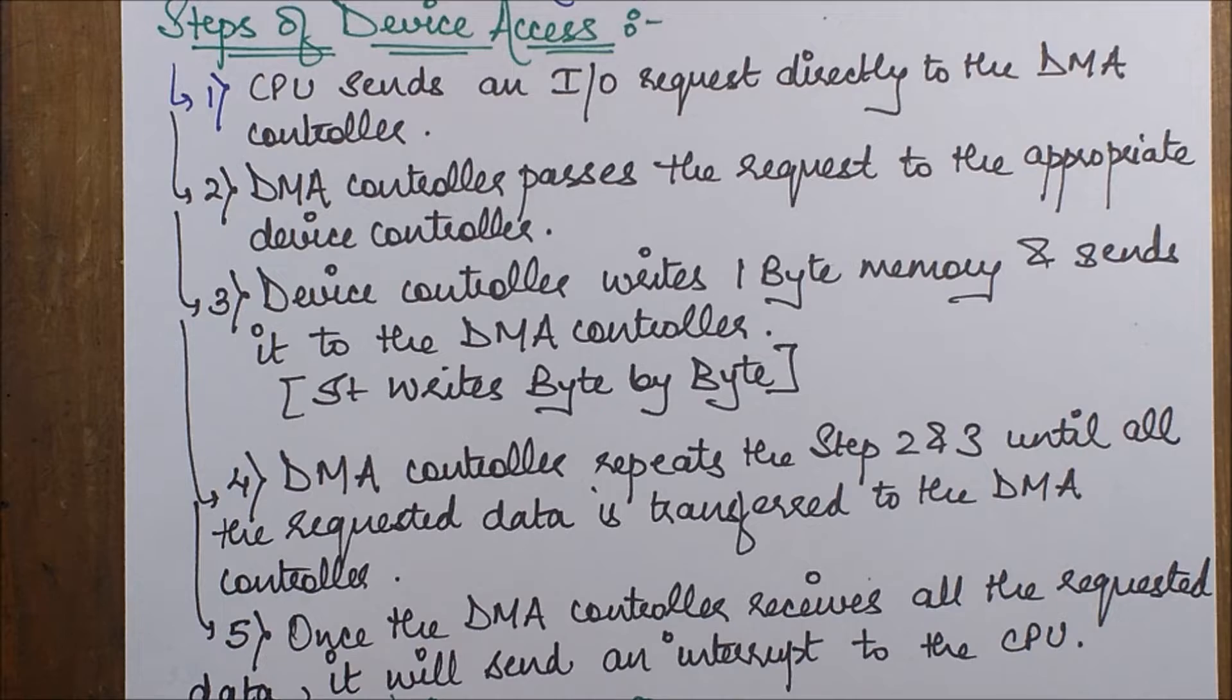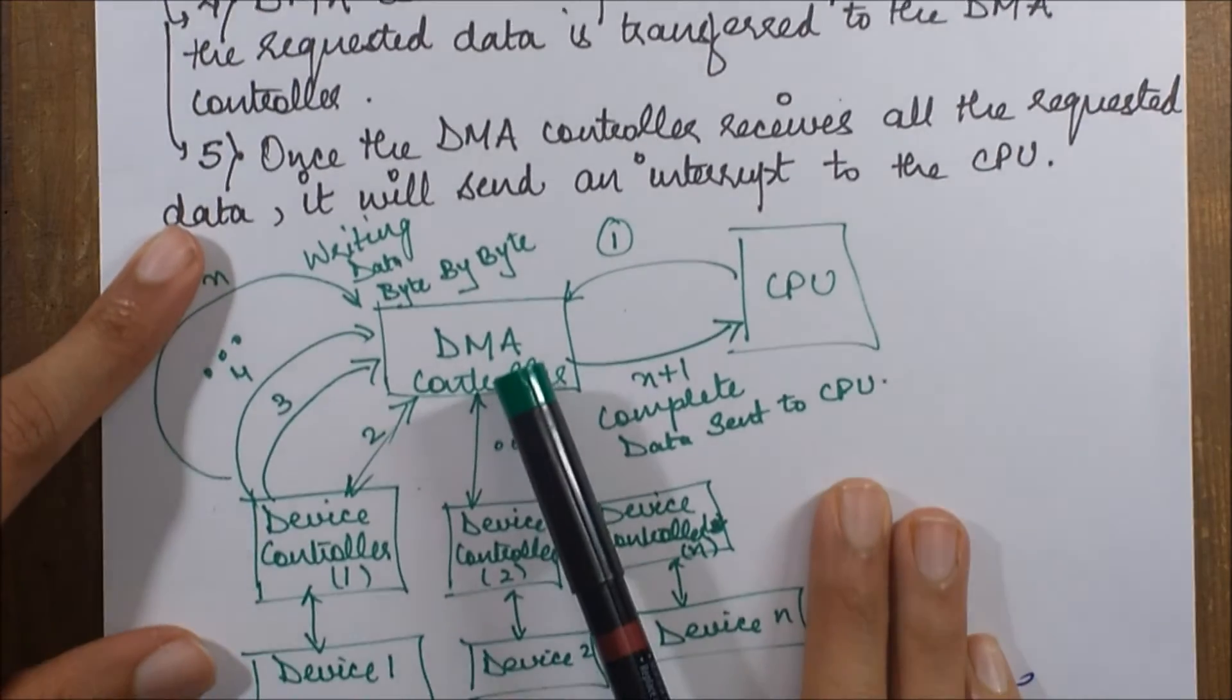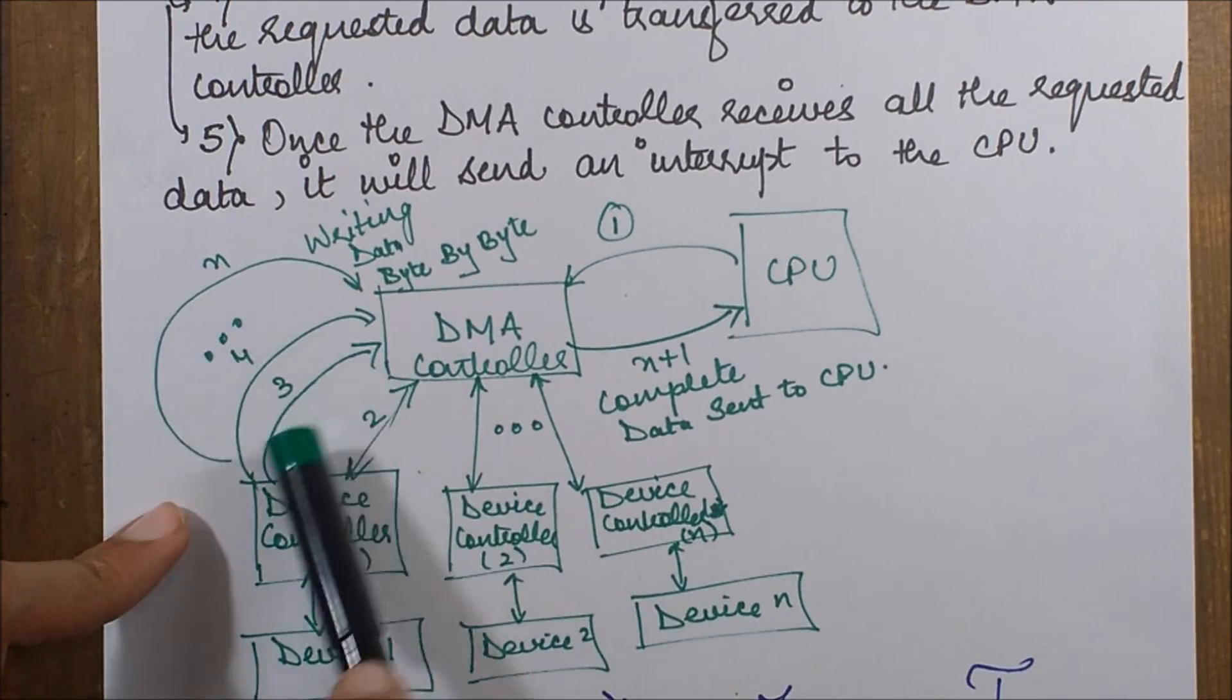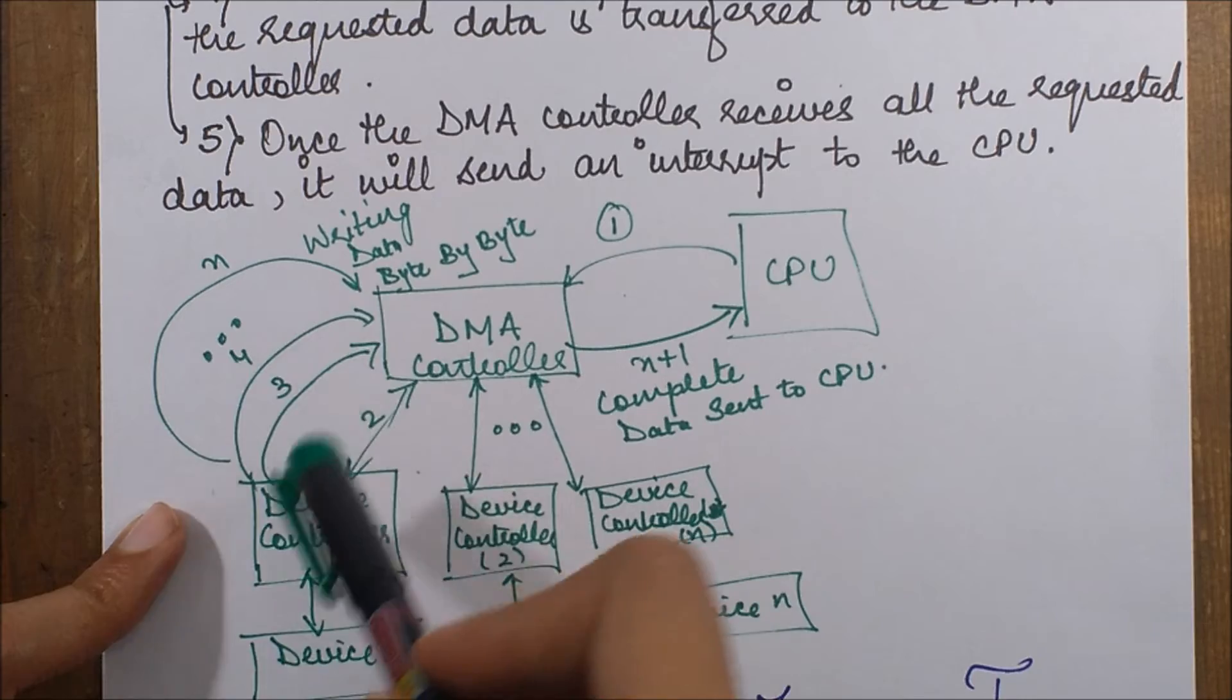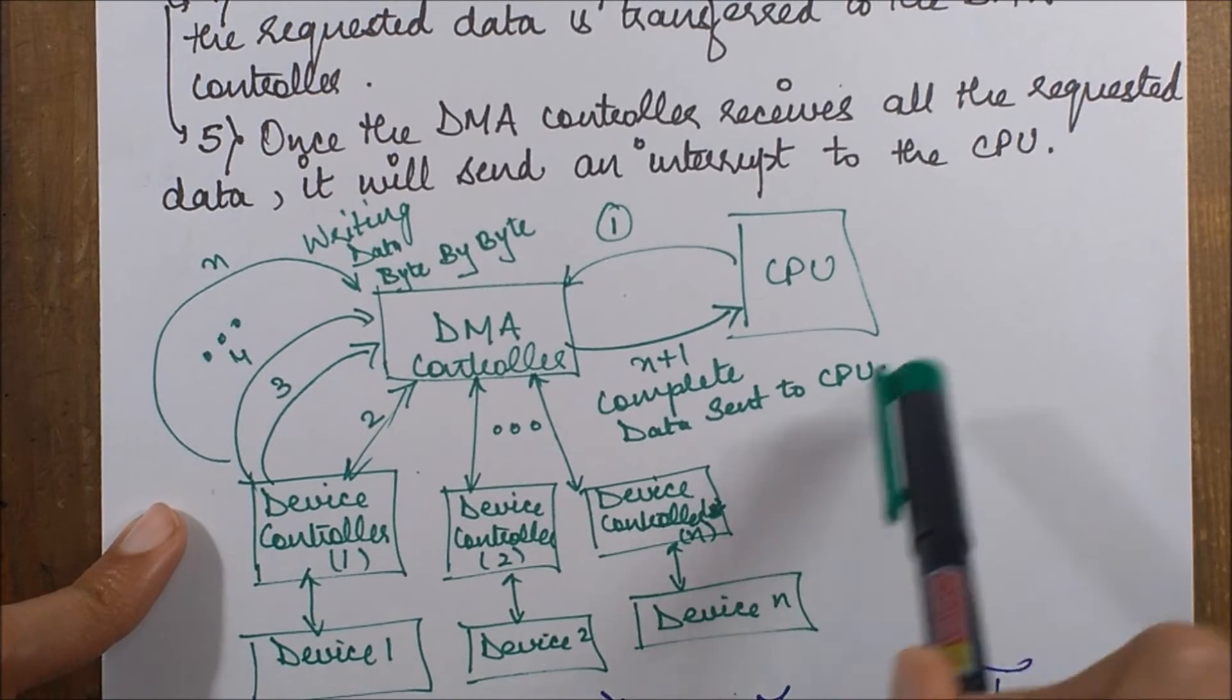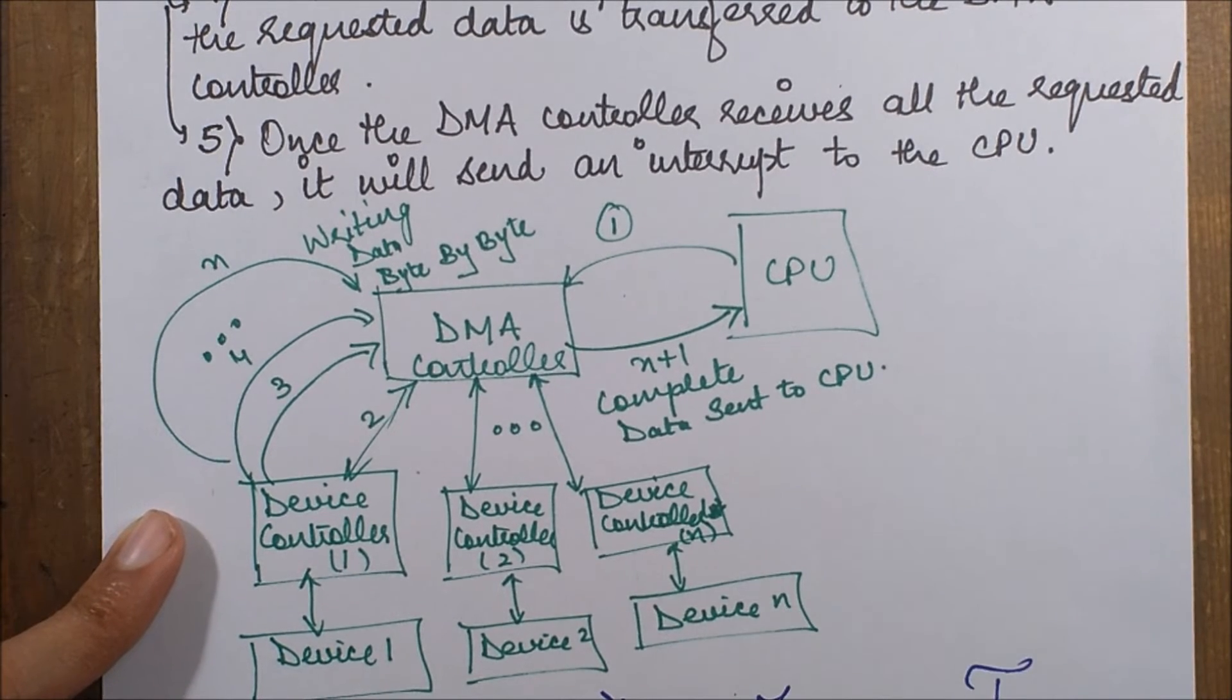Once the DMA controller receives all the requested data, it will send an interrupt to the CPU. After collecting the entire data in the form of these bytes, it finally sends the request to the CPU saying this is the complete data that you wanted and now you can take control of it.